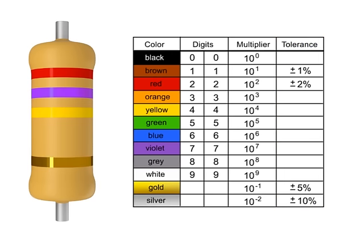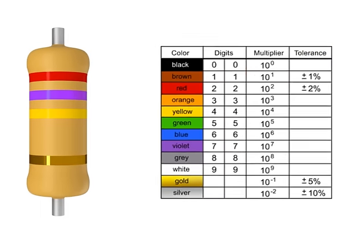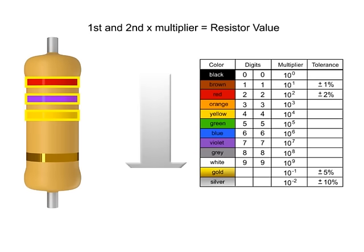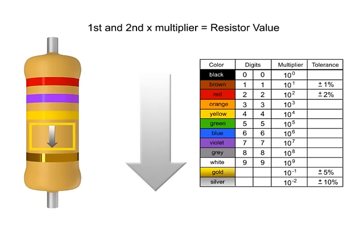You read resistor bands beginning with the end that has the most bands. A space between the third and fourth bands also indicates the reading direction.